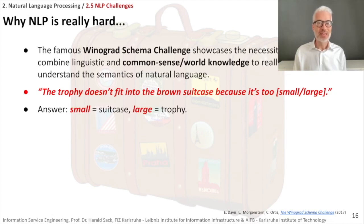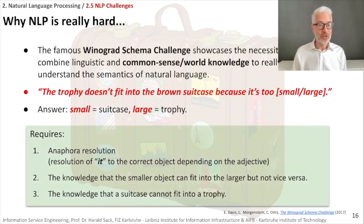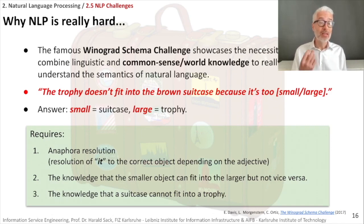You must use 'small' if 'it' refers to the suitcase, or 'large' if 'it' refers to the trophy. To resolve this, you have to know something about the world — what a trophy is and what a suitcase is. You have to perform anaphora or co-reference resolution: on which previous entity does the pronoun refer? Then you have to know that a smaller object fits into a larger one but not vice versa, and that a suitcase cannot fit into a trophy. This is all common sense, world knowledge learned by experience — and you can only do a correct resolution if you know these things.